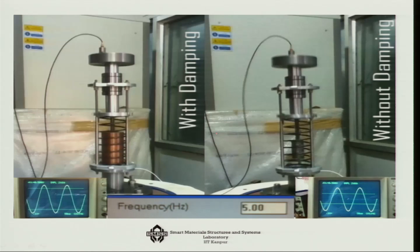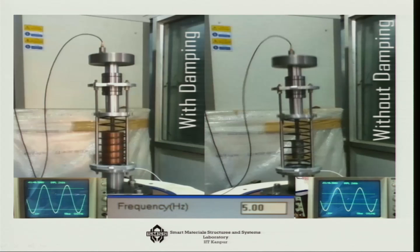Two systems are shown: one has a damper in the form of a copper block, and the other does not. The copper block contains magnetic blocks — as the magnets move inside the copper block, they generate eddy currents, converting oscillatory vibrational energy into electrical energy.